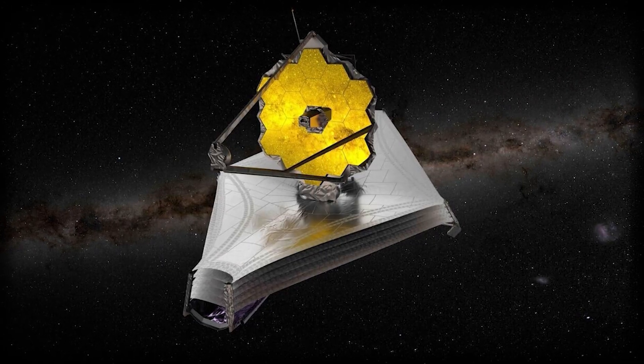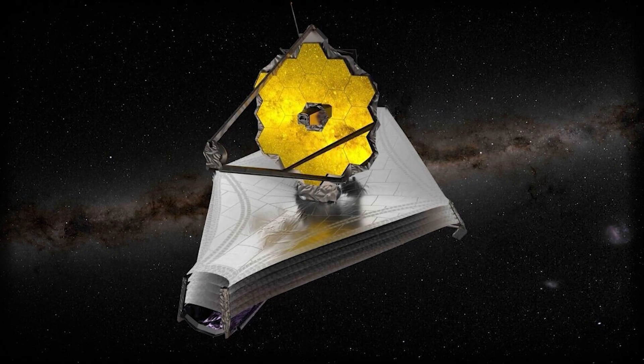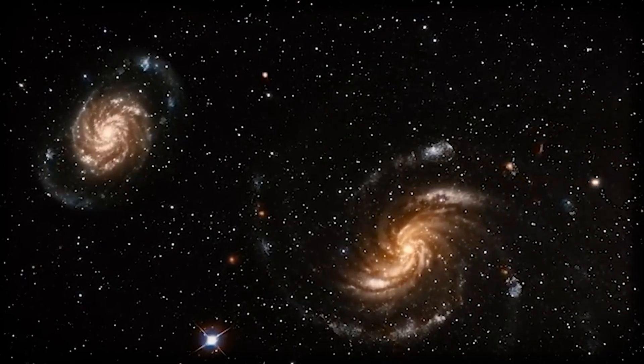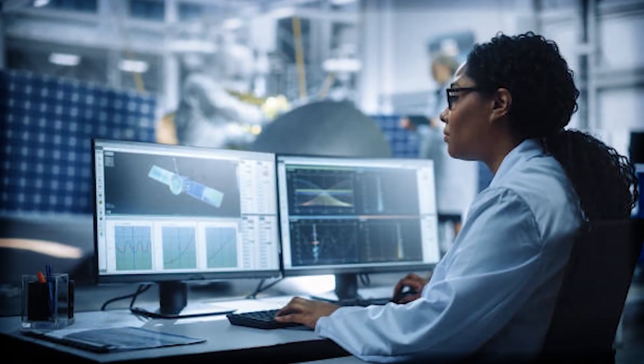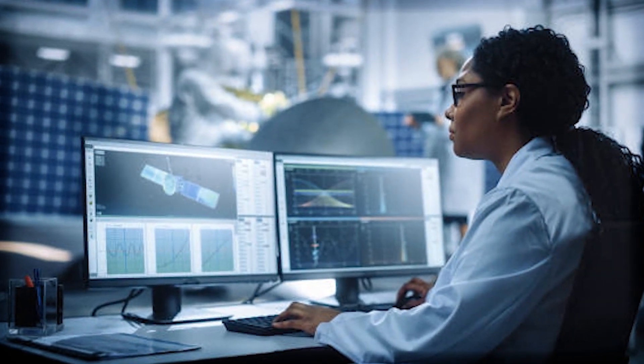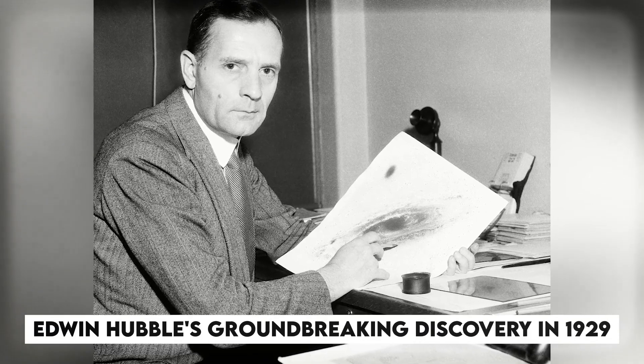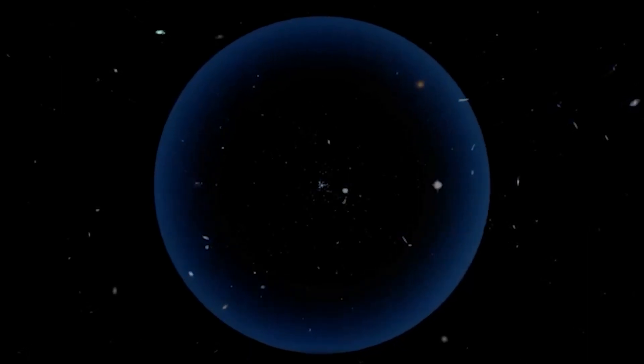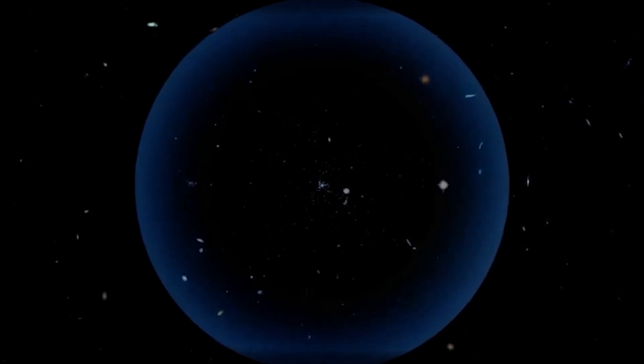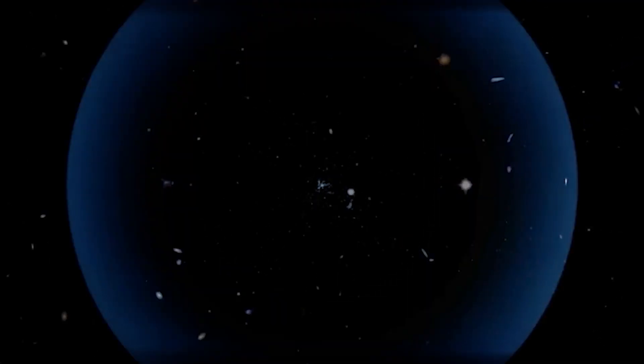So, what exactly did the James Webb Space Telescope witness at the farthest edge of our observable universe? And why are scientists saying these discoveries could rewrite everything? Since Edwin Hubble's groundbreaking discovery in 1929, we've known the universe is expanding. Galaxies are rushing away from each other. Not because they're flying through space, but because space itself is stretching.